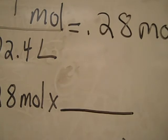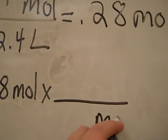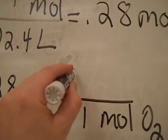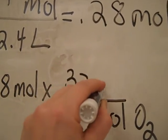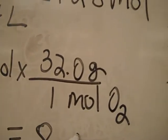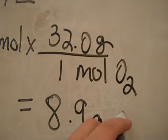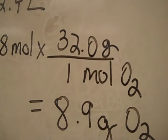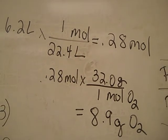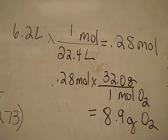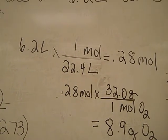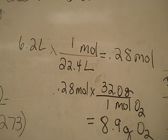You would then still take the 0.28 moles, use the masses on the periodic table. For one mole of oxygen gas, O2, there's going to be 32.0 grams. And so once again, you're going to get approximately 8.9 grams of O2. It's going to depend on how many figures you've kept in your calculator. You really should keep all the values in your calculator until the very last step and then round. We're rounding to two significant figures because we tried to use at least two the whole way through.